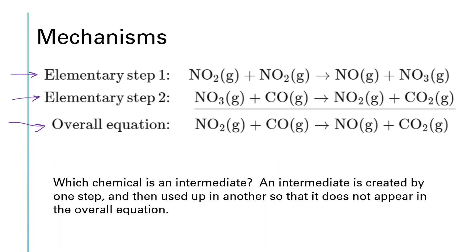If you take these two elementary steps and add them together, the overall reaction that we get is NO2 plus CO yields NO plus CO2. But we're showing that this transfer of the oxygen atom is a little bit more complicated. It's not just going from an NO2 to the CO. It's going from an NO2 to another NO2 to make NO3, and then that oxygen gets transferred from the NO3 to the CO to finally give us the CO2.